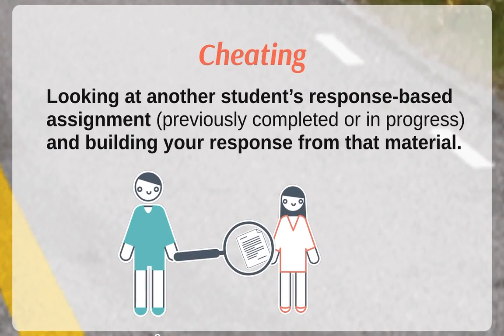Another violation would be cheating — looking at another student's assignment and building your response from that material, whether it's an assignment the student is currently completing or something from a previous semester. When you're given an assignment, you should assume that you are expected to complete it as an individual unless the professor specifically states that you can collaborate. You could not ethically ask to see a classmate's assignment or look at a graded exam from a friend who took the class in an earlier semester. If you're having difficulty, talk to the TA or professor before the assignment is due.